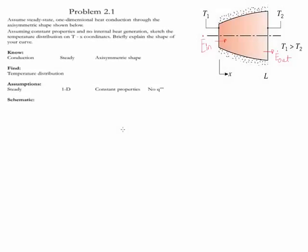Problem 2.1. This is a one-dimensional conduction steady case. We have a shape that is axisymmetrical to this given axis.